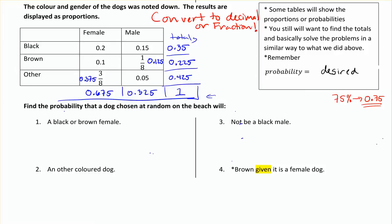To find the probabilities with these, we just need to identify which parts of the table match what's being asked. For black or brown female: 0.2 of them are black females, and 0.1 of them are brown females. So the proportion out of the whole group on the beach would be 0.2 plus 0.1, giving 0.3. So there's a 30% chance, or 0.3 probability, of picking a female black or brown dog off the beach.